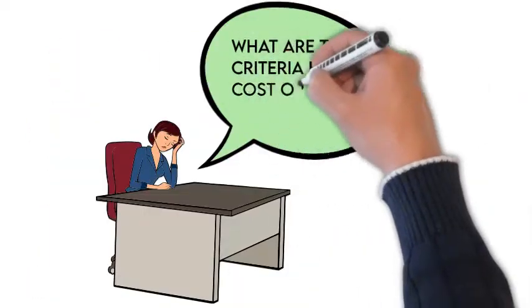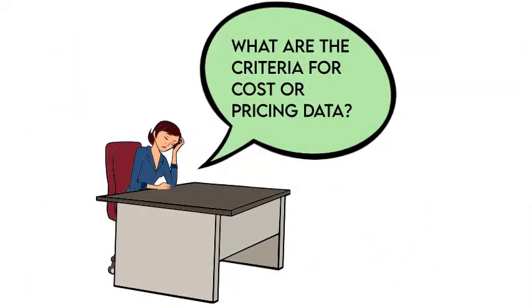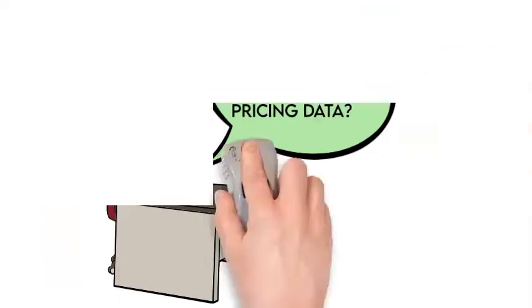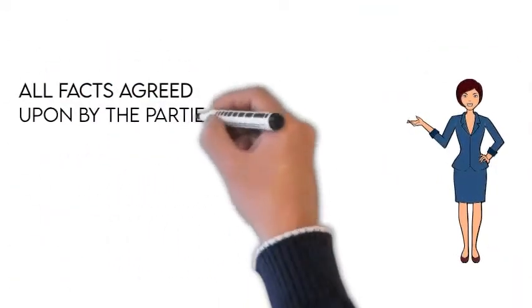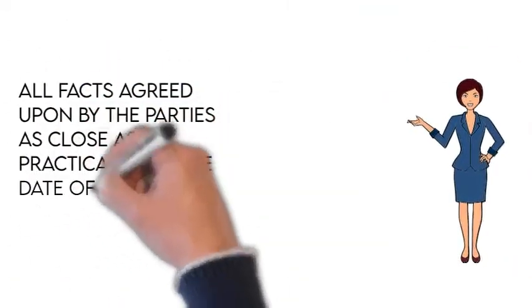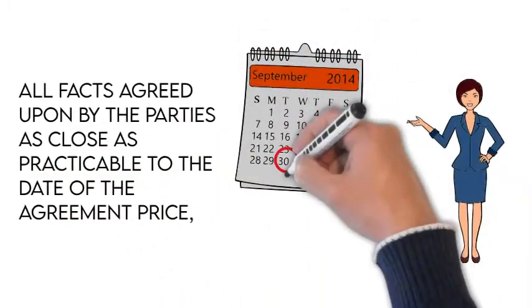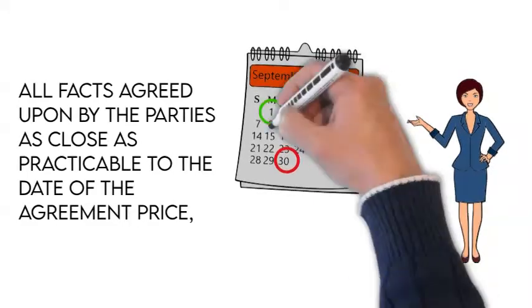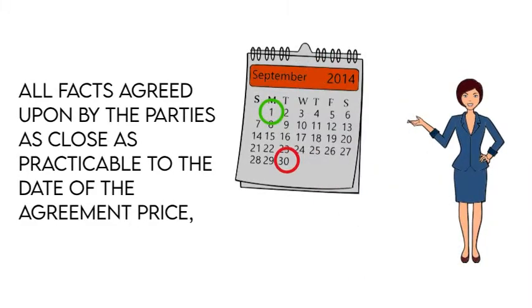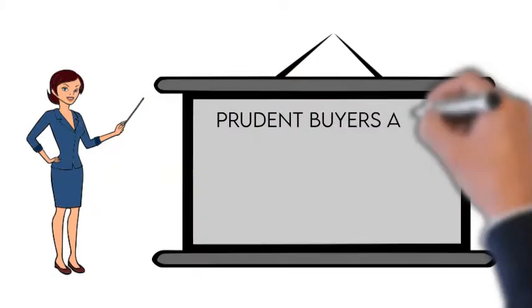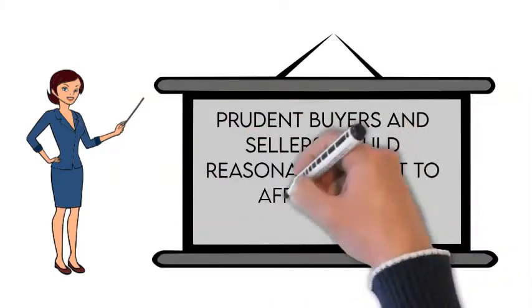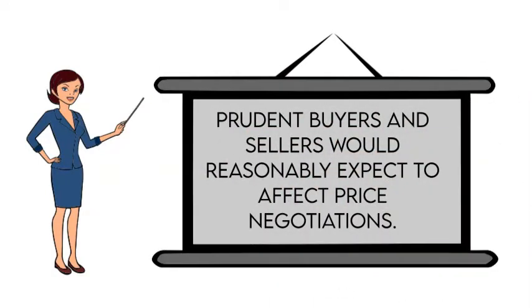So what are the criteria for cost or pricing data? Cost or pricing data means all facts that, as of the date of the price agreement, or if applicable, an earlier date agreed upon between the parties that is as close as practicable to the date of agreement on the price, prudent buyers and sellers would reasonably expect to affect price negotiations significantly.